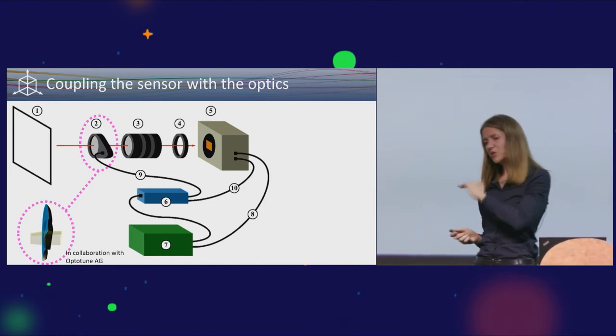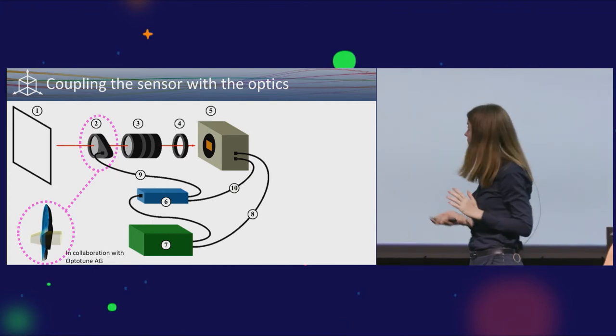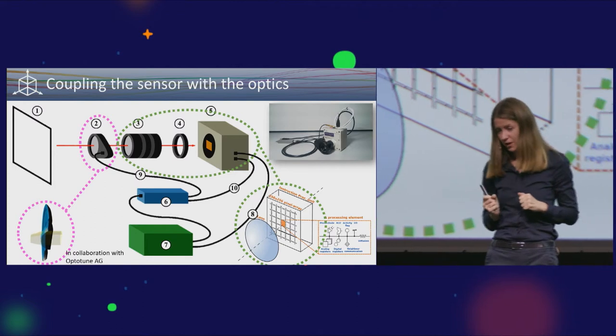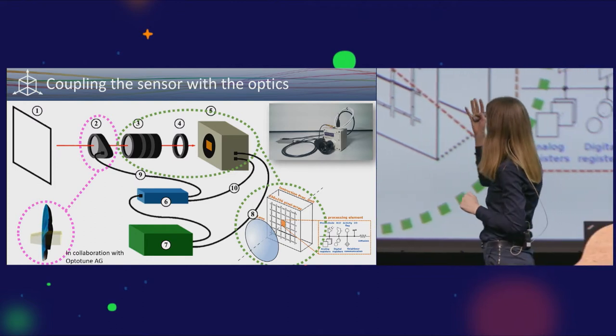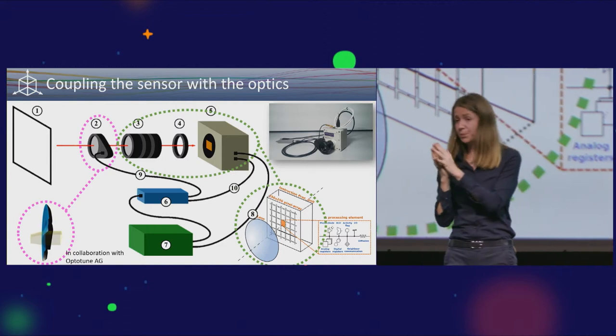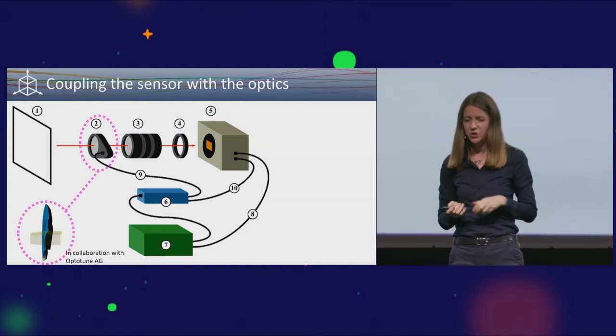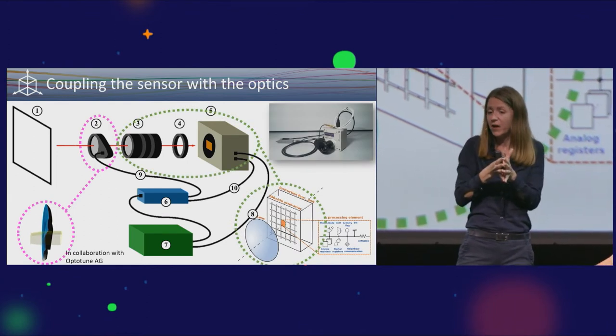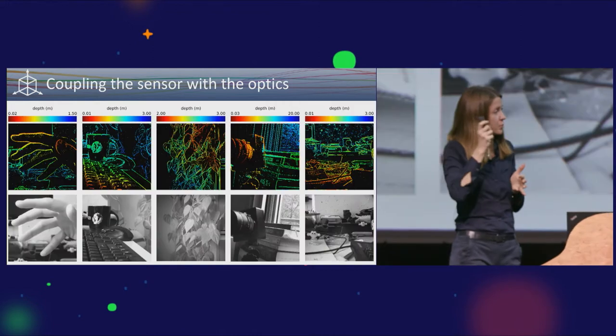In collaboration with OptoTune AG, a company here in Zurich, we got access to such a liquid lens that can breathe and vibrate, changing its focal strength very quickly, 200 times per second. The second element we need is to compute which pixels are in focus in many images. You have to do it very fast. On the computer you won't be able to do it so fast. So we use a special sensor in collaboration with Manchester where every pixel is a little processor on its own.